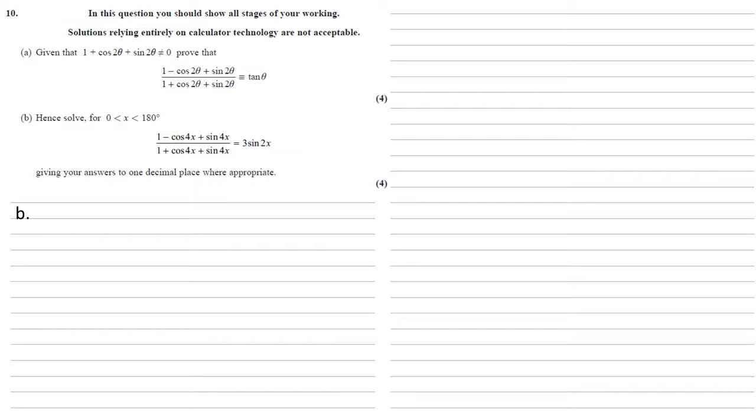So the important thing here is that word hence, it means we're going to use our work from part a, make part b a lot simpler. We can do that by seeing that the left hand side of both equations are very similar. All that's happened is that 2 theta in a has been replaced with 4x in b.